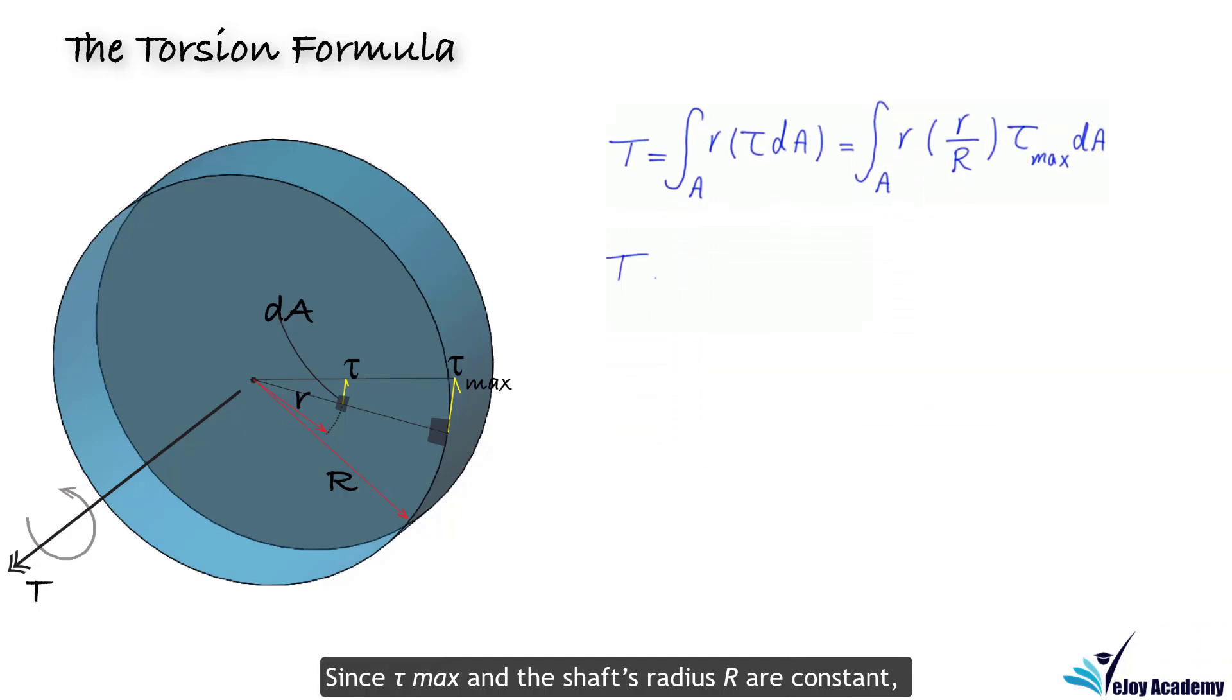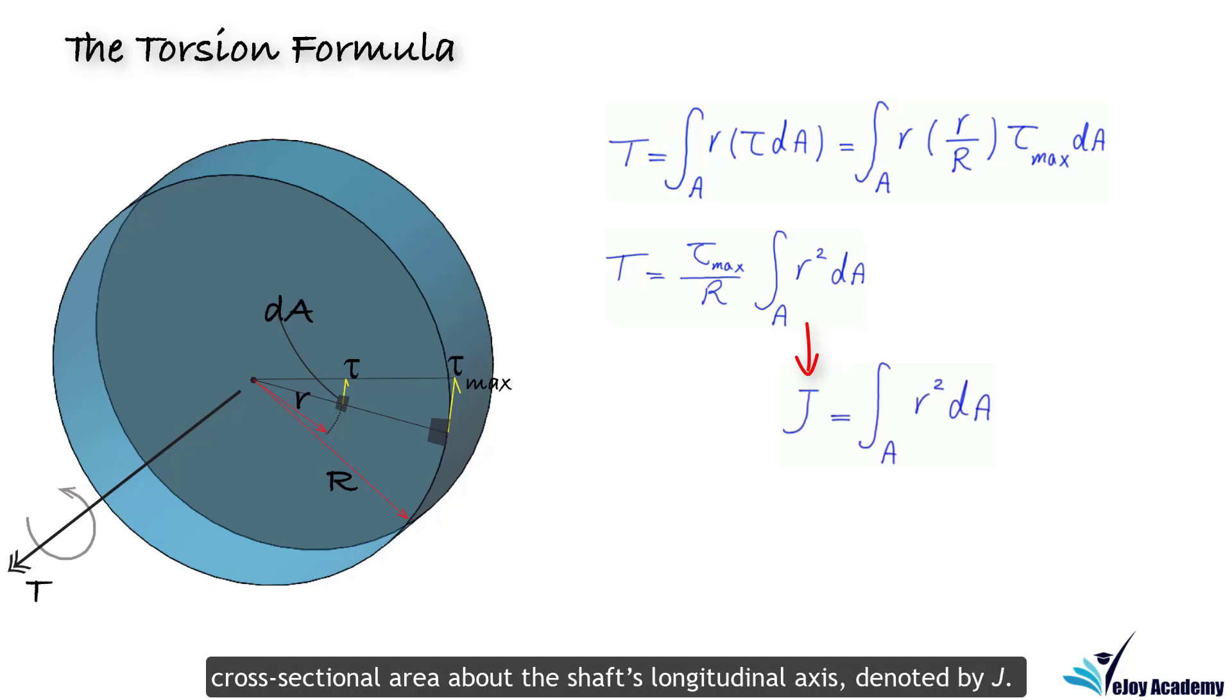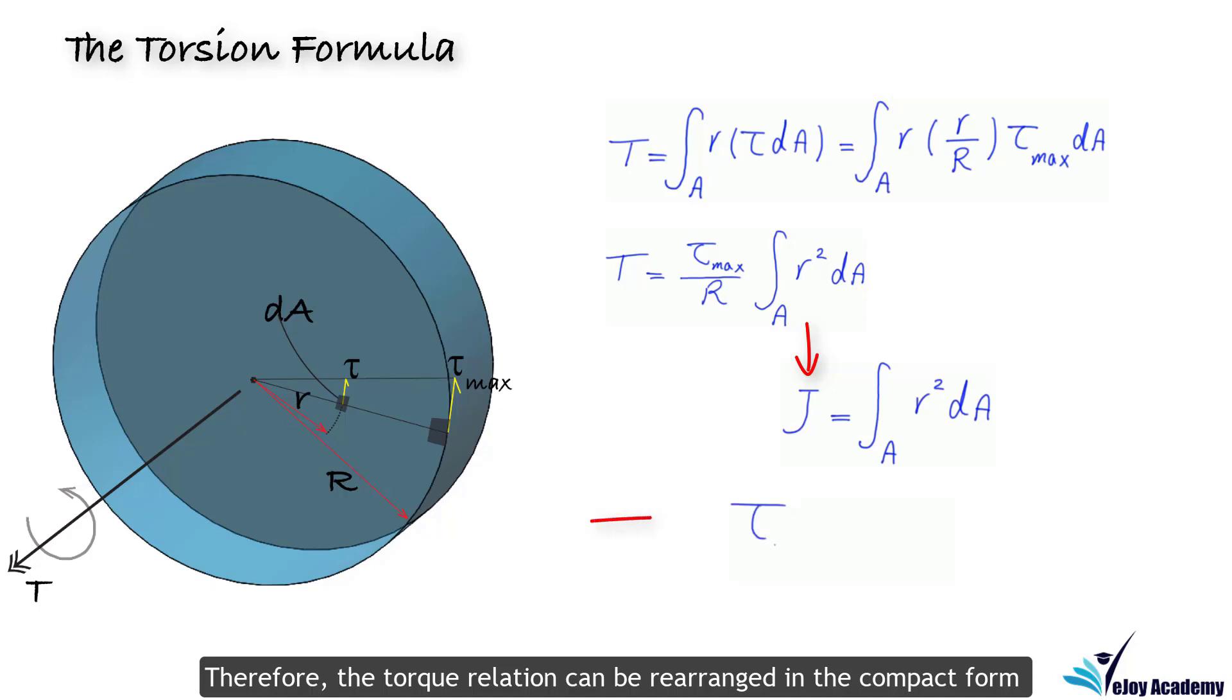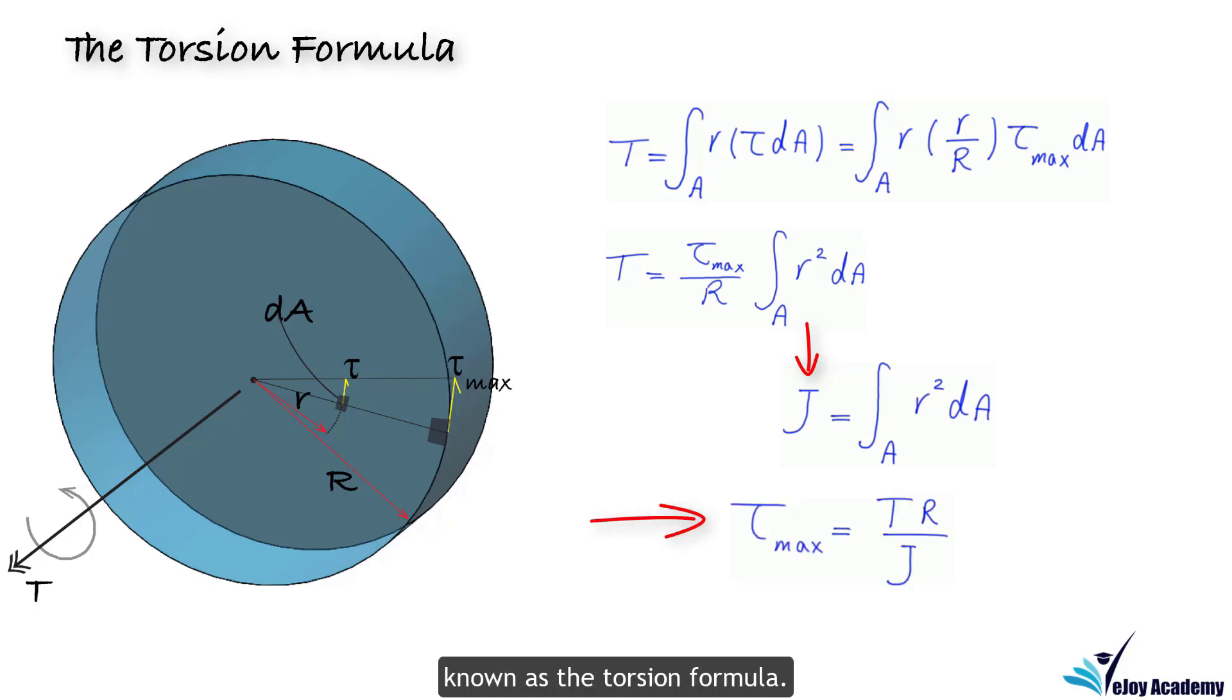Since tau max and the shaft's radius r are constant, they can be taken out of the integral. This integral is the polar moment of inertia of the shaft's cross sectional area about the shaft's longitudinal axis, denoted by J. Therefore, the torque relation can be rearranged in the compact form known as the torsion formula.